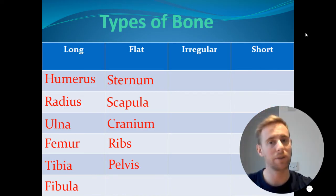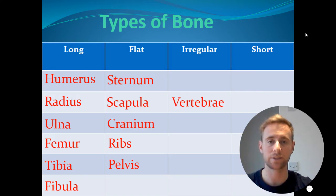We then have two irregular bones which don't really fit into any of the other categories. We have vertebrae and we have the patella. Then finally, we have one short bone which is for fine movements, which is known as the talus.